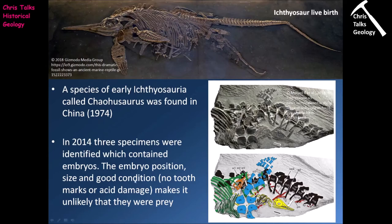Because we don't have tooth marks and acid damage, that would suggest that these small ichthyosaurs were not prey items. We can see a beautiful example of an ichthyosaur containing fetuses — there are actually three fetuses within this particular ichthyosaur. Here we have the spinal column, ribs, and one of the hind fins.